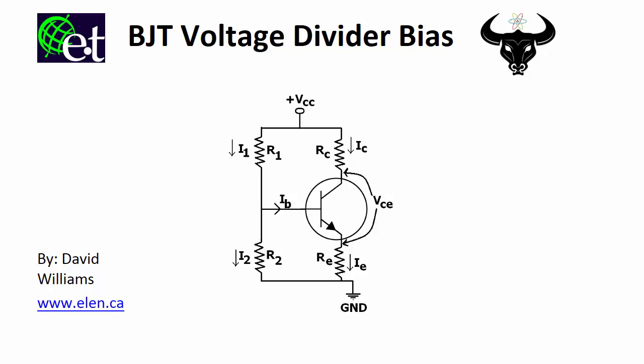Hi, Dave Williams here, and in this video I want to explain bipolar junction transistor voltage divider bias circuits. The circuit shown here is a voltage divider bias circuit, and as you probably guessed, it's called a voltage divider bias because this voltage divider network is used for biasing the transistor into the region that you want it to be in. These voltage divider bias circuits are probably the most common way to bias bipolar junction transistors because they are quite independent of the value of beta.